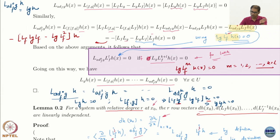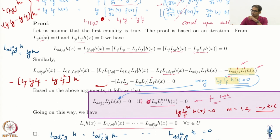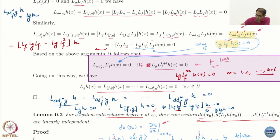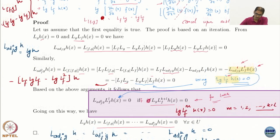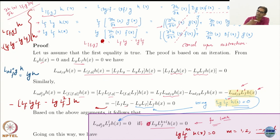What I strongly recommend is: please go back and write out these terms yourself in a notebook. If you write it out, it will be clear. This is the only key thing that we needed to prove, and once we prove it, the entire proof goes through by using it successively again and again.